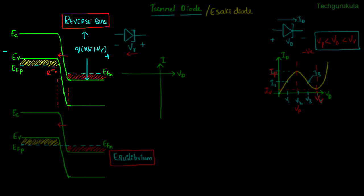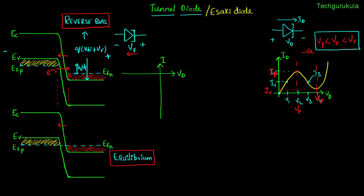Even under reverse bias, because the doping is very heavy, the depletion width remains small — still in angstroms or nanometers. Below EFp there will be a lot of electrons, and above EFn there will be a lot of empty states, separated by a small barrier width. As a result, these electrons tunnel through the barrier. As we increase the reverse bias voltage, the difference between EFp and EFn equals q times Vr, so more electrons see more vacant states, and current keeps increasing. Since this current flows in the opposite direction to our reference, it is plotted on the negative ID axis against negative Vd.